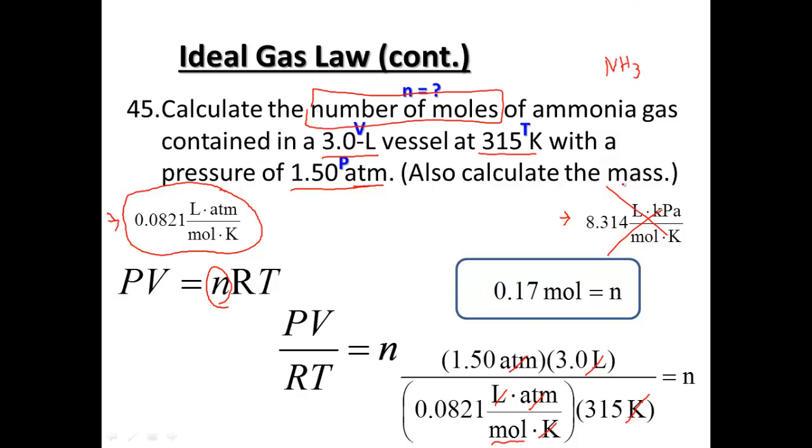Now ammonia is NH3, so if we wanted to go a step further and actually find the mass, you know the moles, molar mass over grams from the periodic table, you could find the mass also, or a number of moles. So we'll just stop there for now.